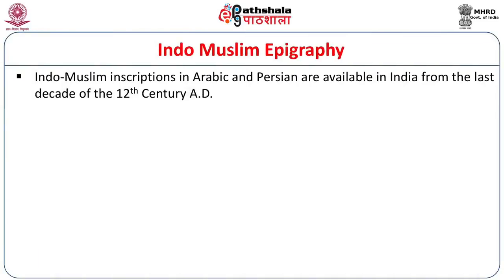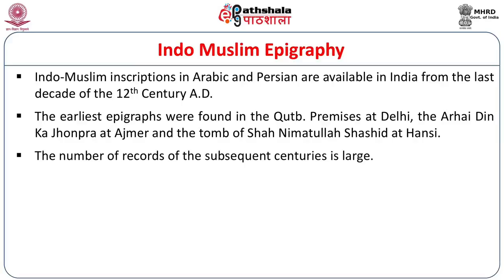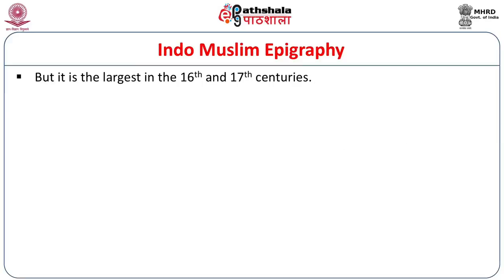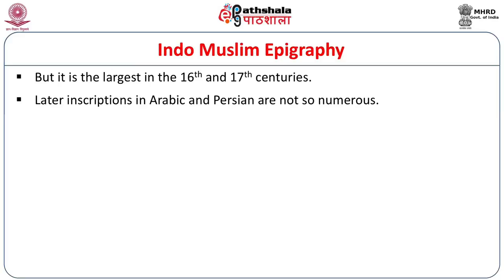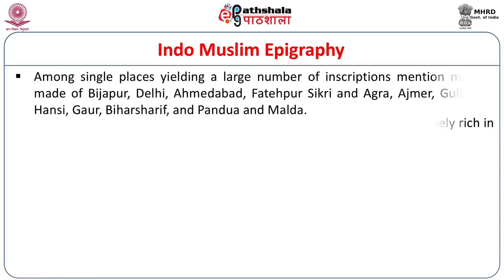Indo-Muslim inscriptions in Arabic and Persian are available in India from the last quarter of the 12th century onwards. The earliest epigraphs were found from the Qutb premises at Delhi, the Arahadin ka Jhompra at Ajmer, and the tomb of Shah Navatul Shah Shahid at Hansi. The number of records of subsequent centuries is quite large. But it is in the 16th and 17th century that later inscriptions in Arabic and Persian are not so numerous. Punjab, Uttar Pradesh, Bengal, Bombay, and Hyderabad are comparatively rich in Indo-Muslim inscriptions, while Tamil Nadu is recorded as very poor as far as Arabic and Persian inscriptions are concerned.